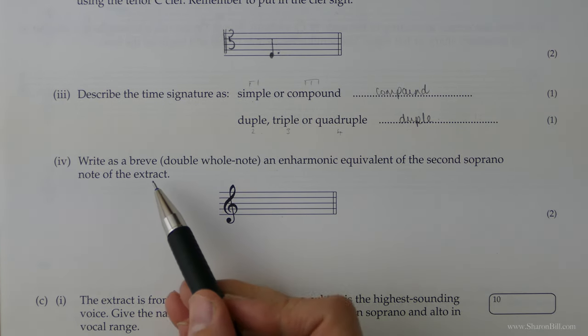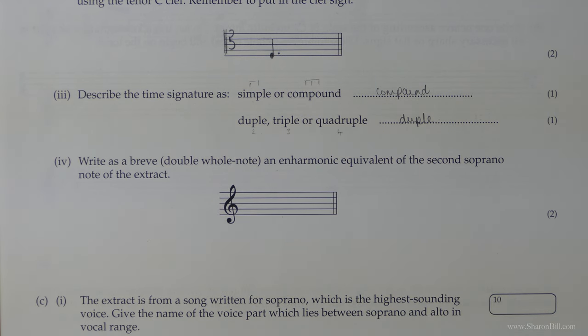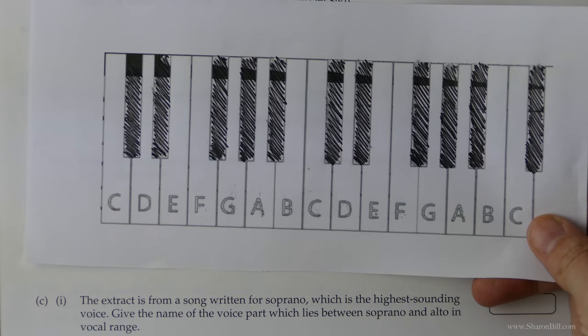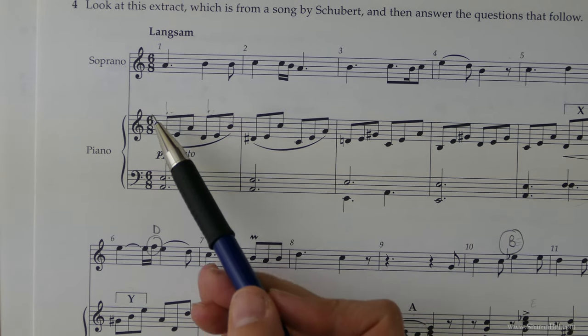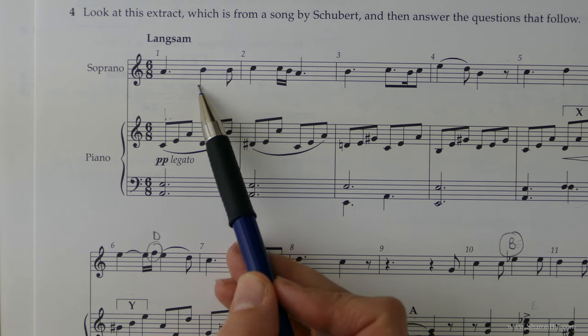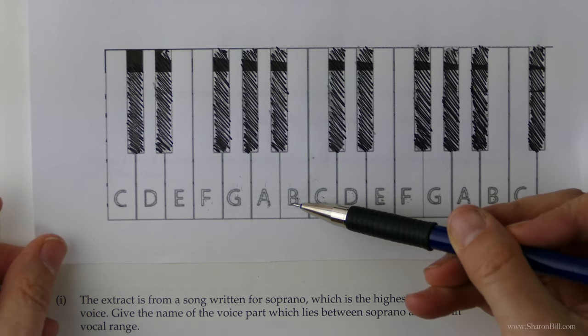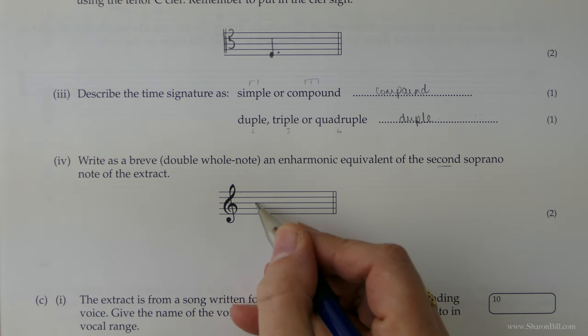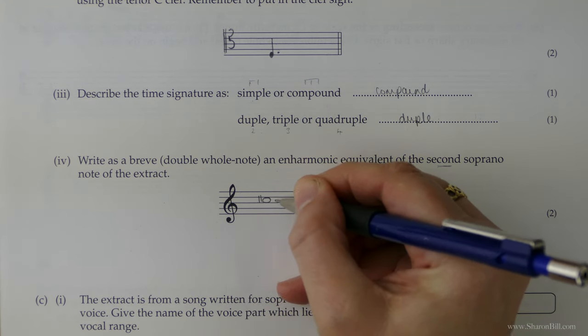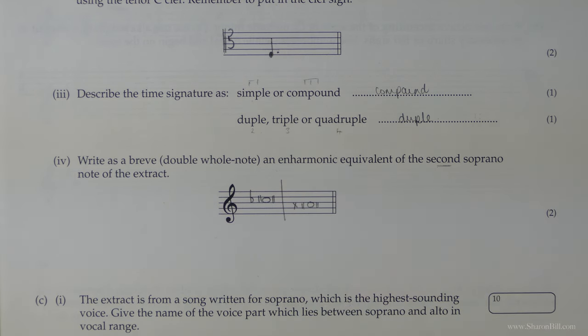We need to write as a breve or a double whole note, the enharmonic equivalent of the second soprano note of the extract. So enharmonic is when it sounds the same but it's written on a different place on the stave. I find it helpful to have the piano keyboard just to visualize here again. So we're looking for the second soprano note of the extract. So here is the soprano part, here's the second note and that's the B above middle C. And so we could call that C flat or we could also call it A double sharp. Just being careful to get that pitch correct.